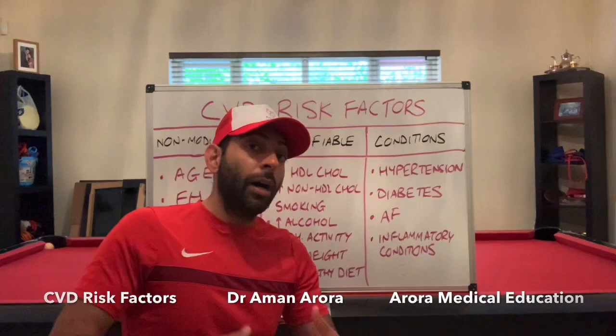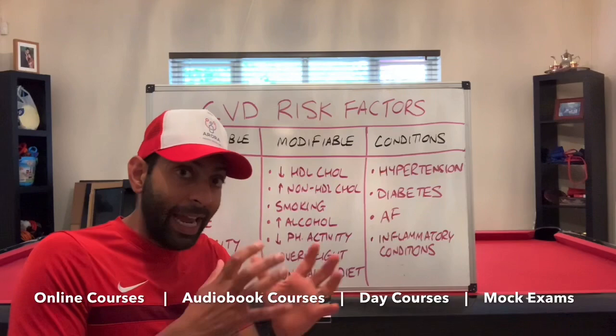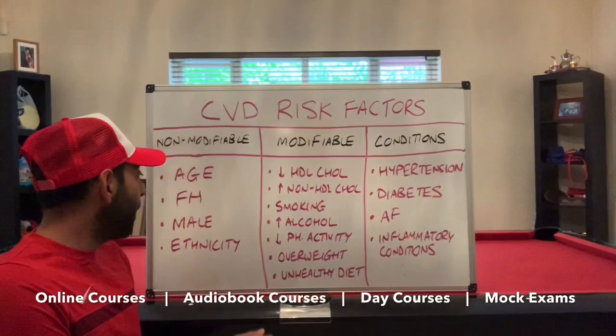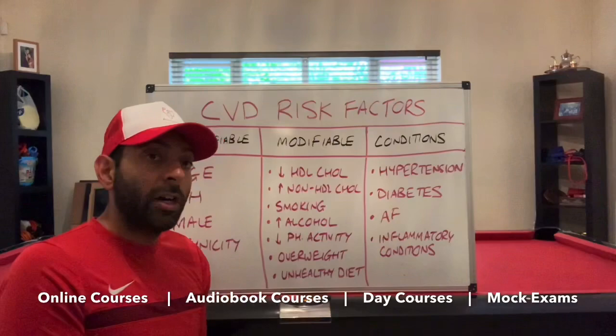Let's start with the non-modifiable ones. Age — cardiovascular disease primarily occurs above the age of 50, so age becomes a risk factor as you get older. Family history, of course, looking back at the history of your family. Being male is a higher risk factor than being female. And also ethnicity, particularly South Asian background or sub-Saharan African background. These are non-modifiable — you can't do anything about them.